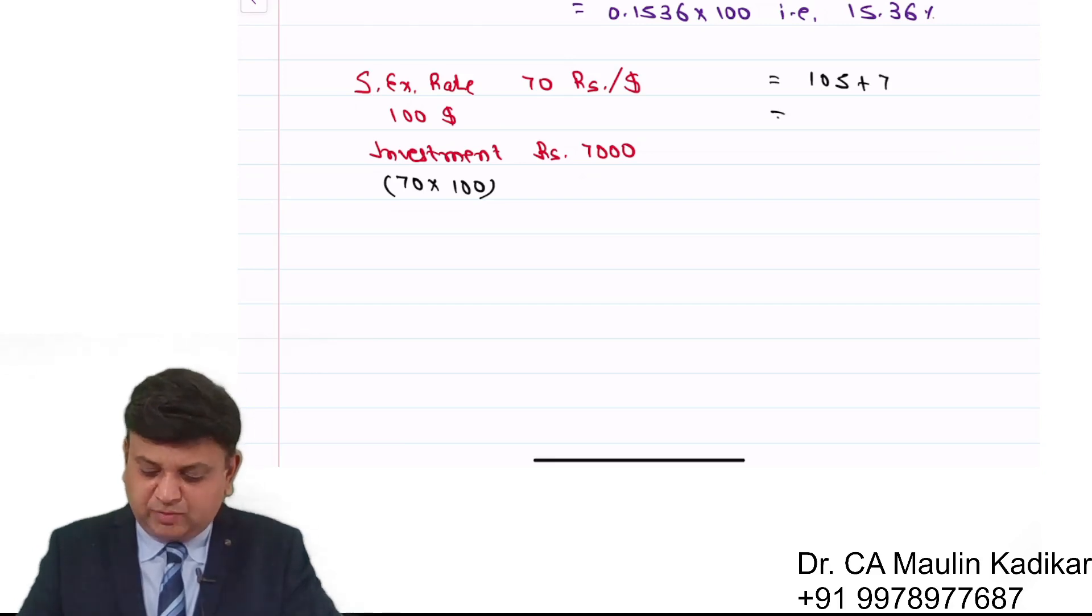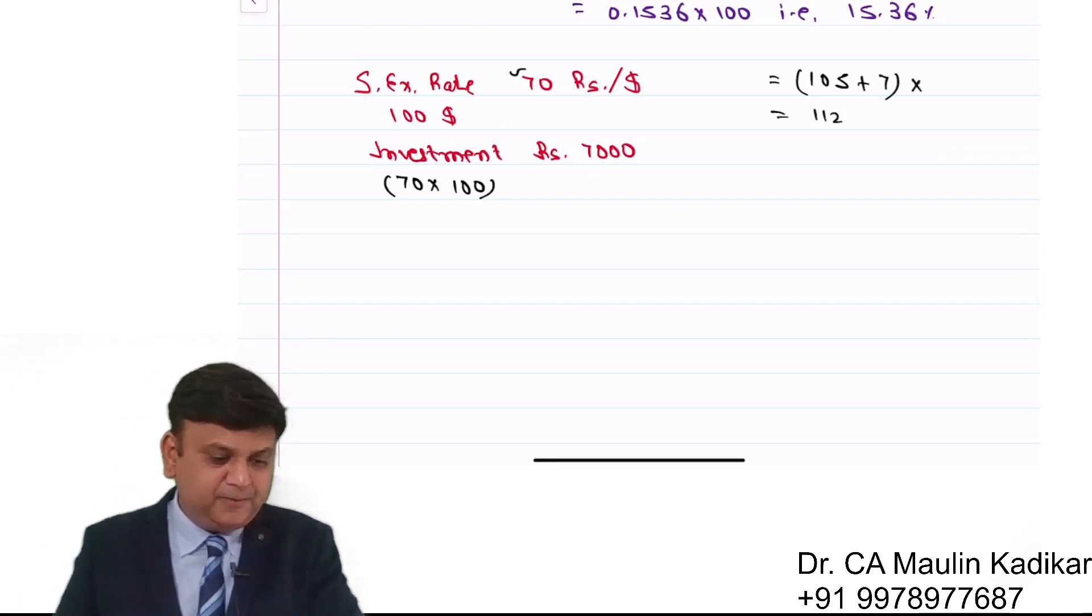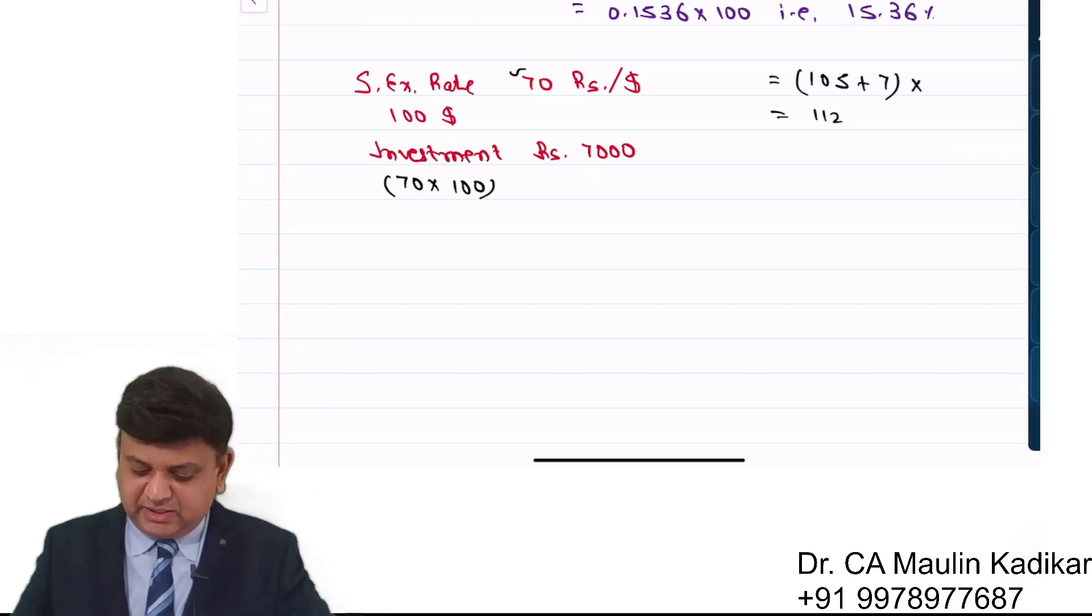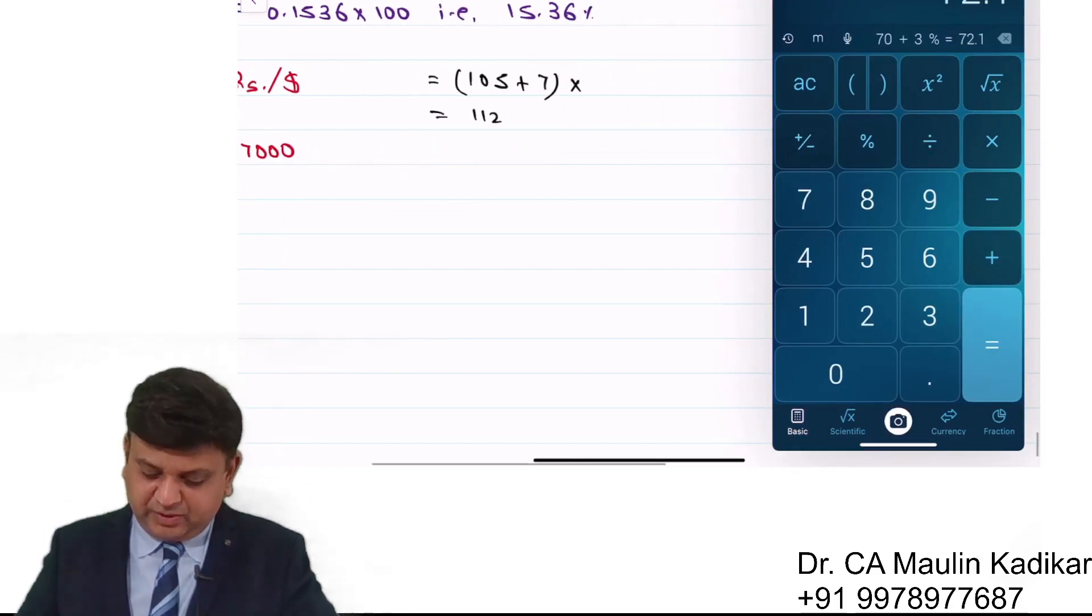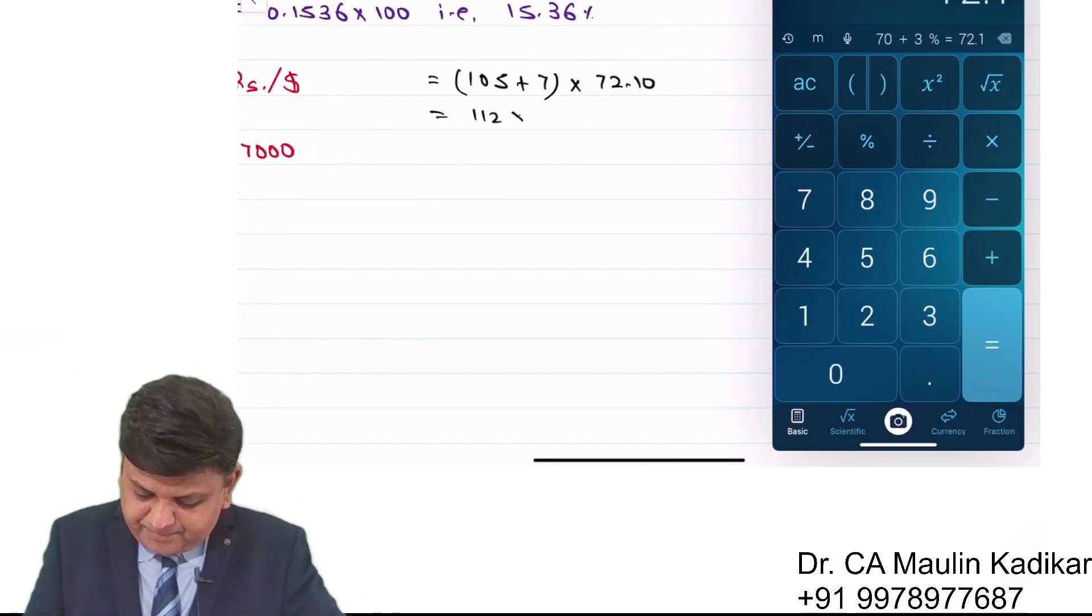By that time, this 70 rupees per dollar must have been appreciated at the rate of 3%. So 70 plus 3%, that comes to 72.1.